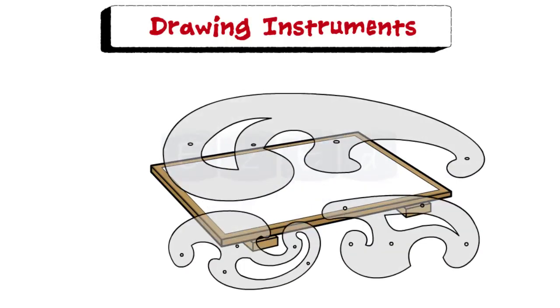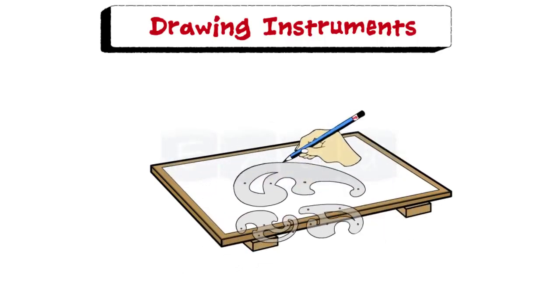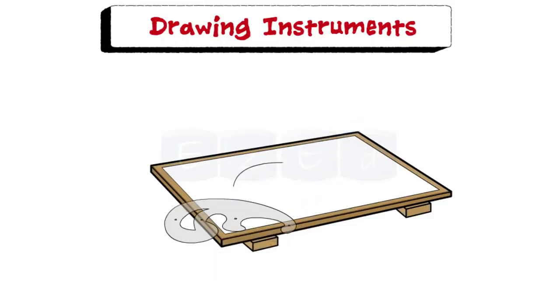Next instrument is the French curve. They are made in various shapes, one of which is shown here. French curve is used for drawing curves which cannot be drawn with a compass. It is used to draw curves like ellipse, parabola, hyperbola, etc.